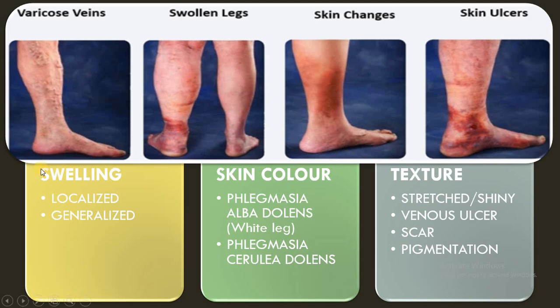On inspection, we can see a swelling which may be localized or generalized, and we can see skin color changes. The first is phlegmasia alba dolens, known as 'white leg', which is due to a swollen limb from excessive edema or lymphatic obstruction. The second is phlegmasia cerulea dolens, which occurs when the skin of the limb becomes congested and blue due to deep vein thrombosis. Additionally, the texture of the skin may be stretched or shiny, and venous ulcers, scars, or pigmented skin may be present.